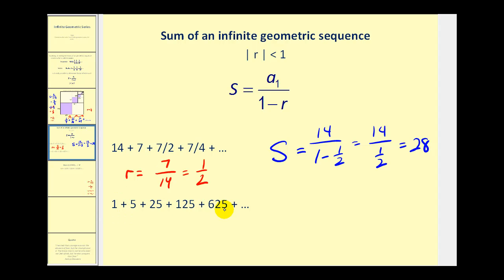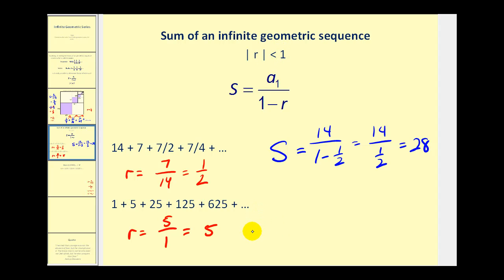For the second series, let's find r. Using the second term, r is equal to five divided by one. Since r equals five, the absolute value of r is not less than one. Therefore, this series does not have an infinite sum because the sum approaches infinity — this sum does not exist.